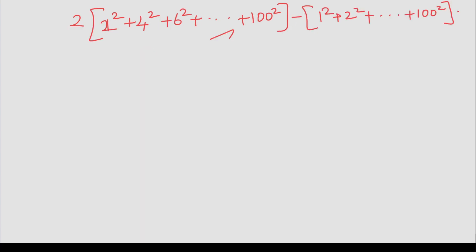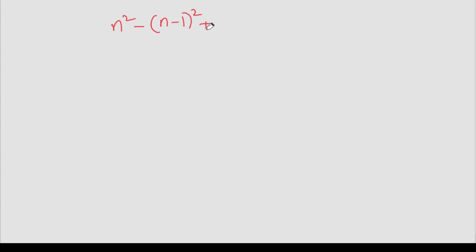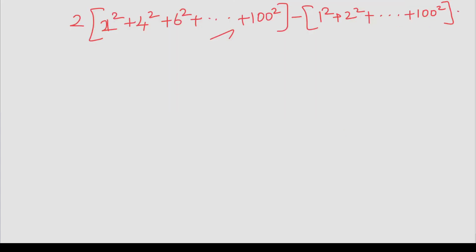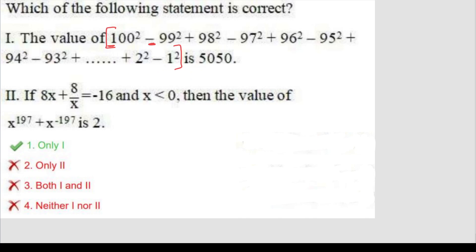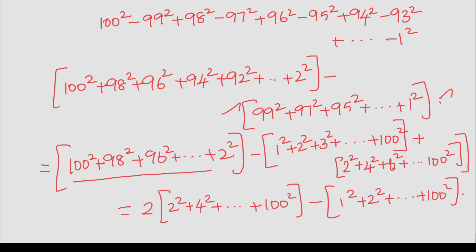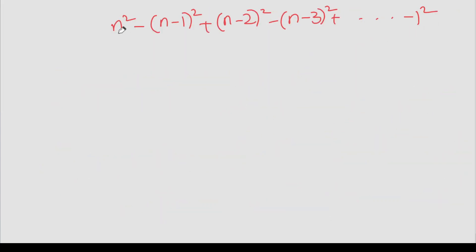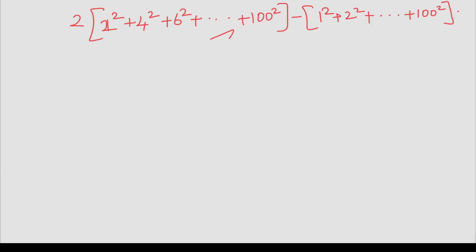Now we will try the generalized format. We have n square — even number — minus (n−1) whole square, plus (n−2) whole square, minus (n−3) whole square — and so on, plus minus, up to 1 square. So in this example, what do we have to do? The value of n is 100. So that sum is 100, and that's why n is 100. So I create a formula here.